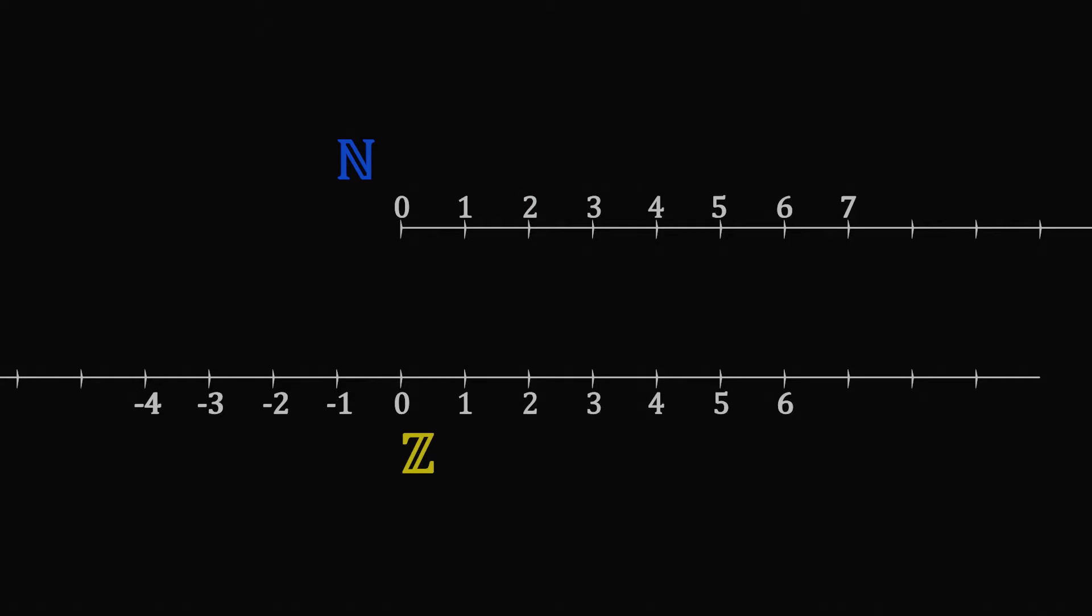For example, it's easy to prove that the set of the integers has the same size as the set of the natural numbers, since we can easily find a one-to-one correspondence.